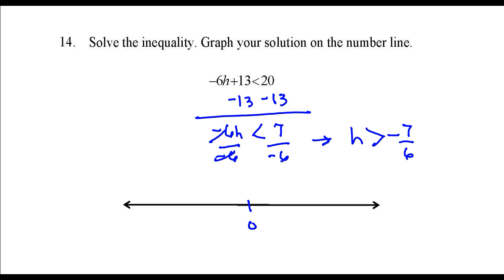We'll put 0 in the middle, negative 1 to the left, here's negative 2, and negative 7 over 6. That's a little bit smaller than negative 1, about right here.